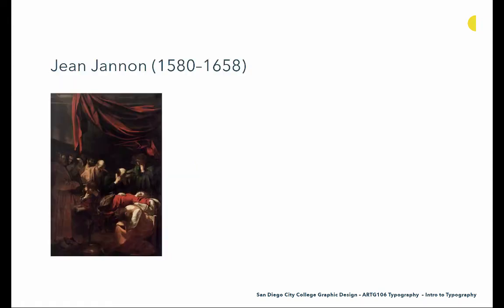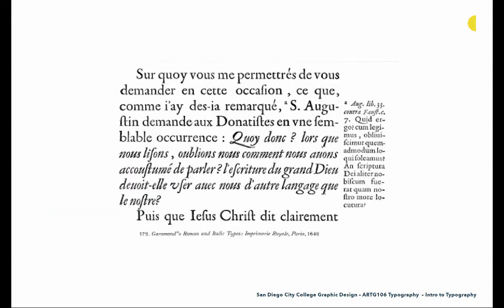Then we have Jean Janin, a contemporary of Garamond whose work was often misattributed to him. He's really known for his work in italic and Roman, but particularly known for setting these things together. This is really the first time we see an italic set with a Roman specifically to create emphasis, and this is really the basis of how we use italic today — fairly groundbreaking.